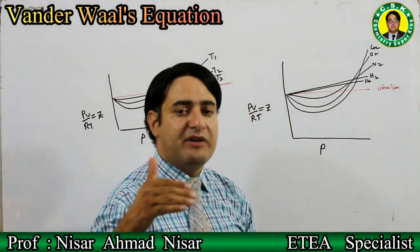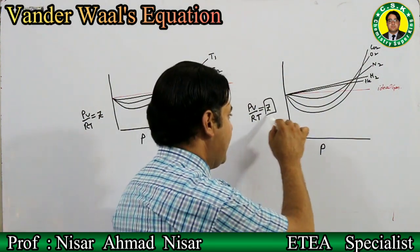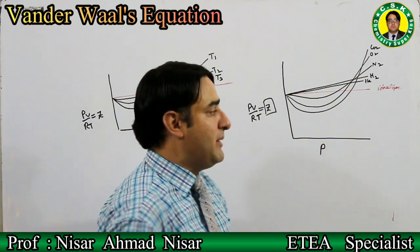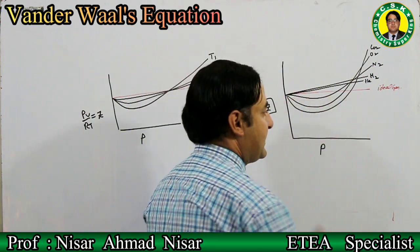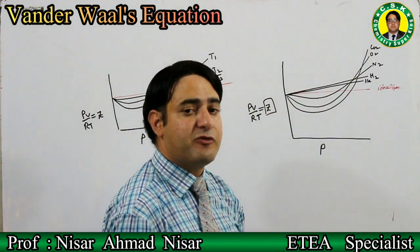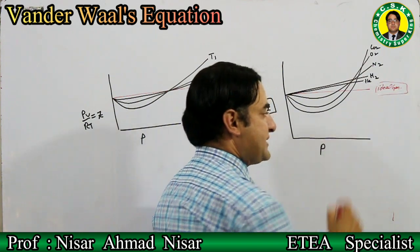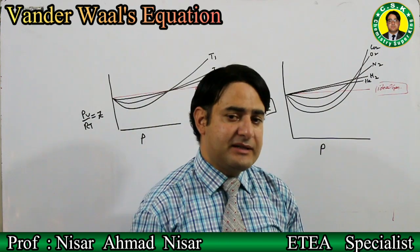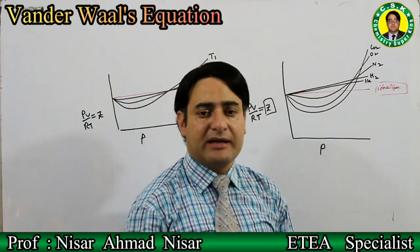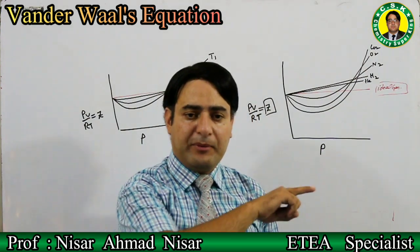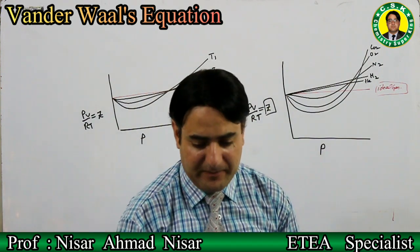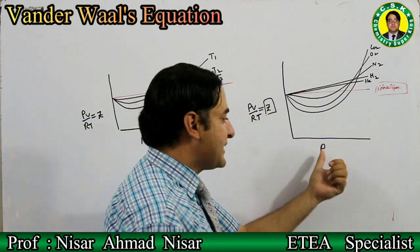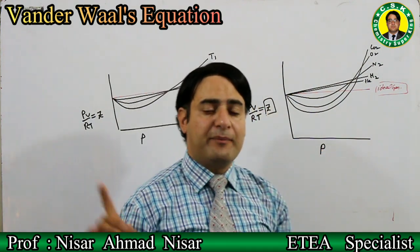When we plot PV/RT — which is the compressibility factor Z — against pressure, we get a horizontal line if the gas is perfectly ideal. So if plotting PV/RT against pressure gives a horizontal line, that gas is ideal.